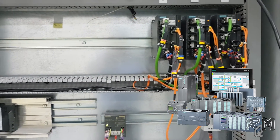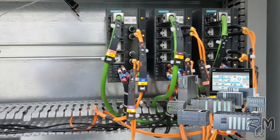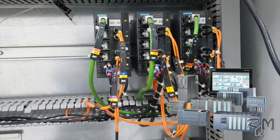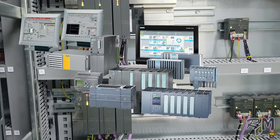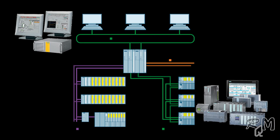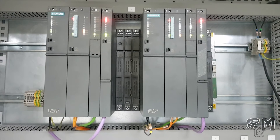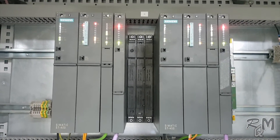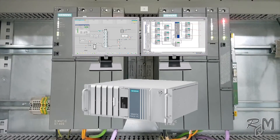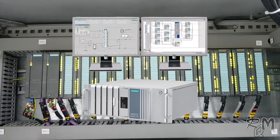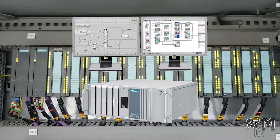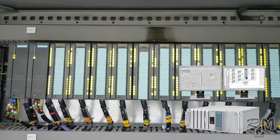The project is displayed with its components, for example stations, modules, and programs. Working in component view, you configure the hardware of automation systems, the bus components, and the process I/Os. In the component view you create the following objects below the project: SIMATIC S7-400 station, SIMATIC PC station for the engineering station, operator station, and batch stations.